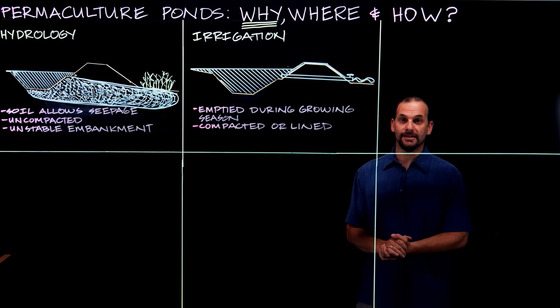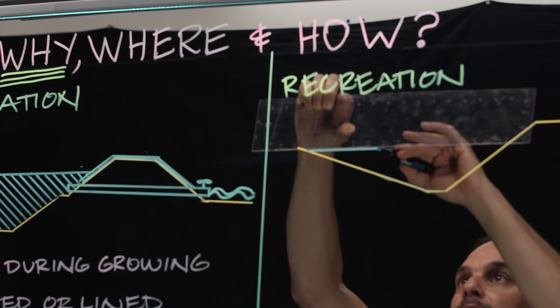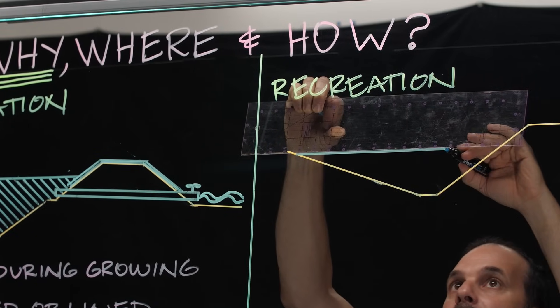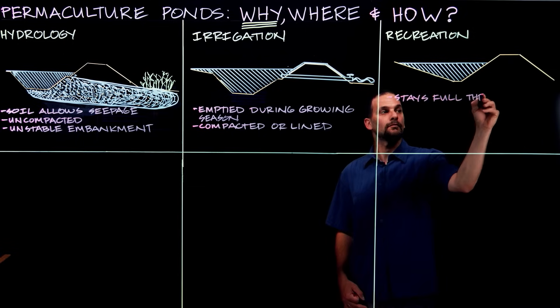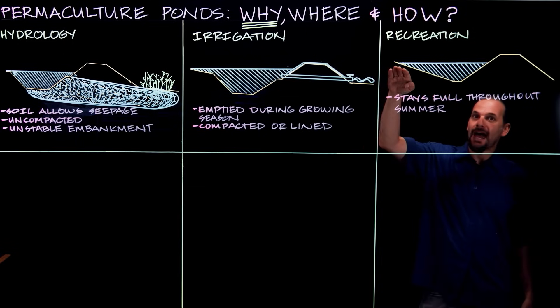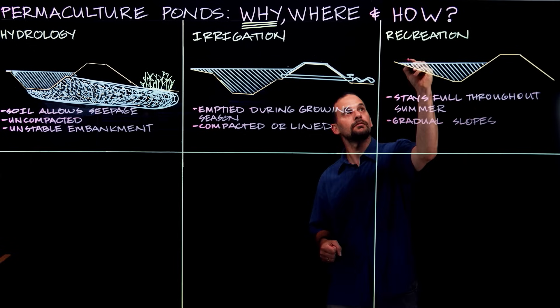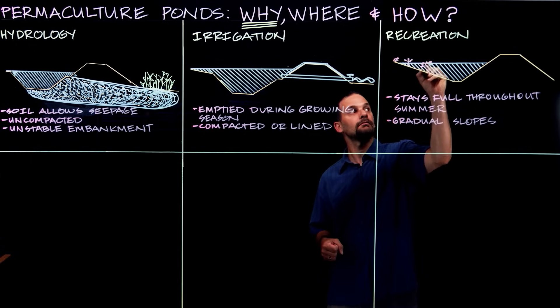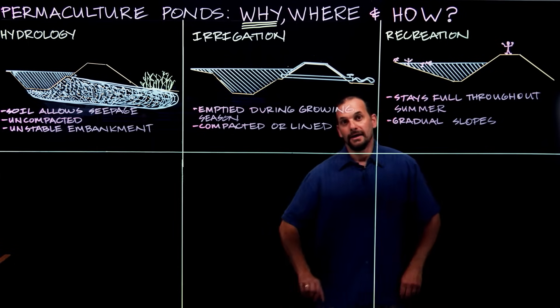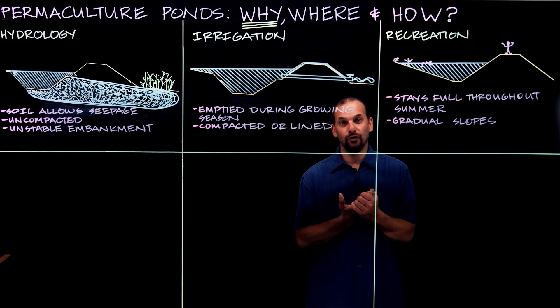Now because the water is being used for watering crops, then a rain-fed irrigation pond will be empty by the end of a dry season. However, a recreation pond wants to stay full through the warm season for swimming and other fun, and it wants to have a gradual slope on all sides so people can get in and out easily and safely, with a shallow end for children.